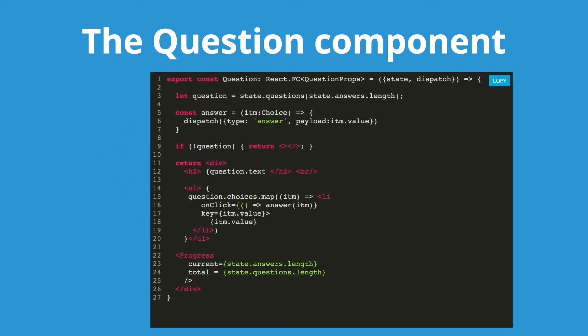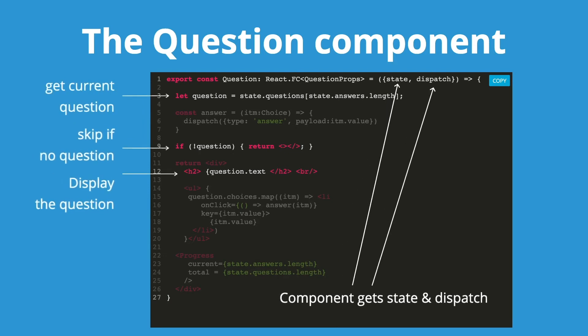Now let's have a look at the question component. In the same way, the question component takes the state and the dispatch as parameters. It gets the current question from the state. If there is no current question, it returns an empty return.